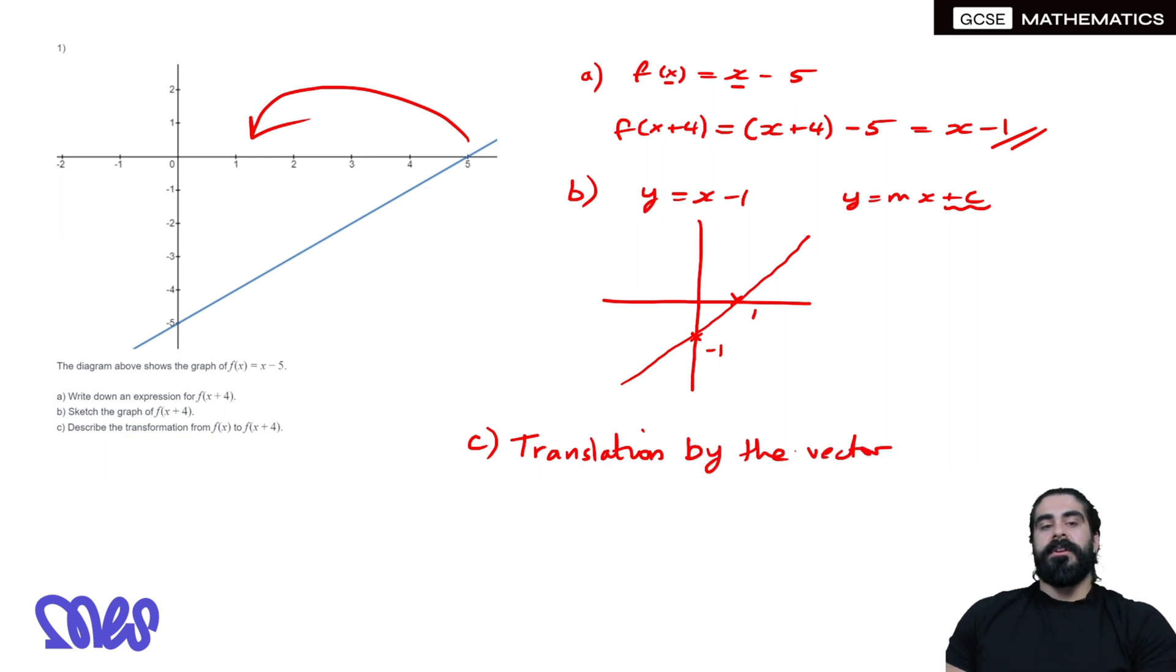When we're moving to the left by 4, we write a column. The top number represents the x-axis. Because we're going to the left, that's the negative direction, so you say -4, and then we're not moving in the y-axis, so we would say 0.